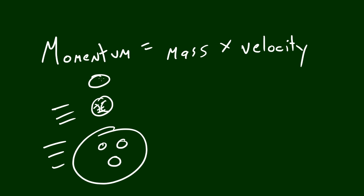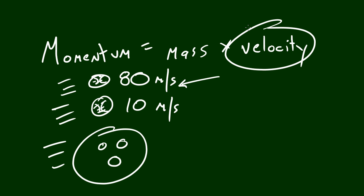Now say that you had two of the same objects, two baseballs. Well baseball A was traveling at 80 meters per second and baseball B was traveling at 10 meters per second. Well of course baseball A would be harder to stop because it has a faster velocity.